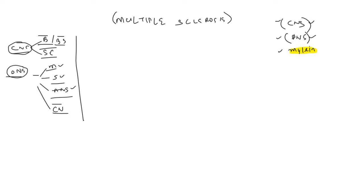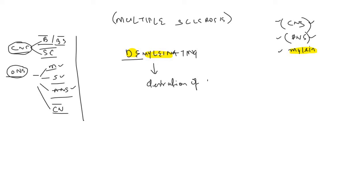What happens in a demyelinating disorder? As the name suggests, the 'de' refers to destruction, 'myelin' means myelin sheath, so demyelinating disorders are those disorders in which we have the destruction of the myelin.